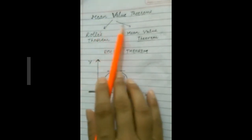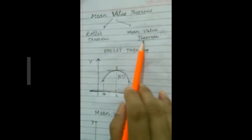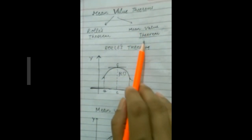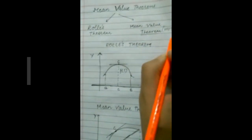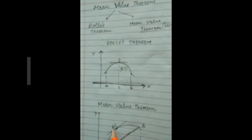Today we will do mean value theorems. There are two theorems: first is Rolle's Theorem, second is Lagrange's Mean Value Theorem, which is generally called the Mean Value Theorem or MVT.